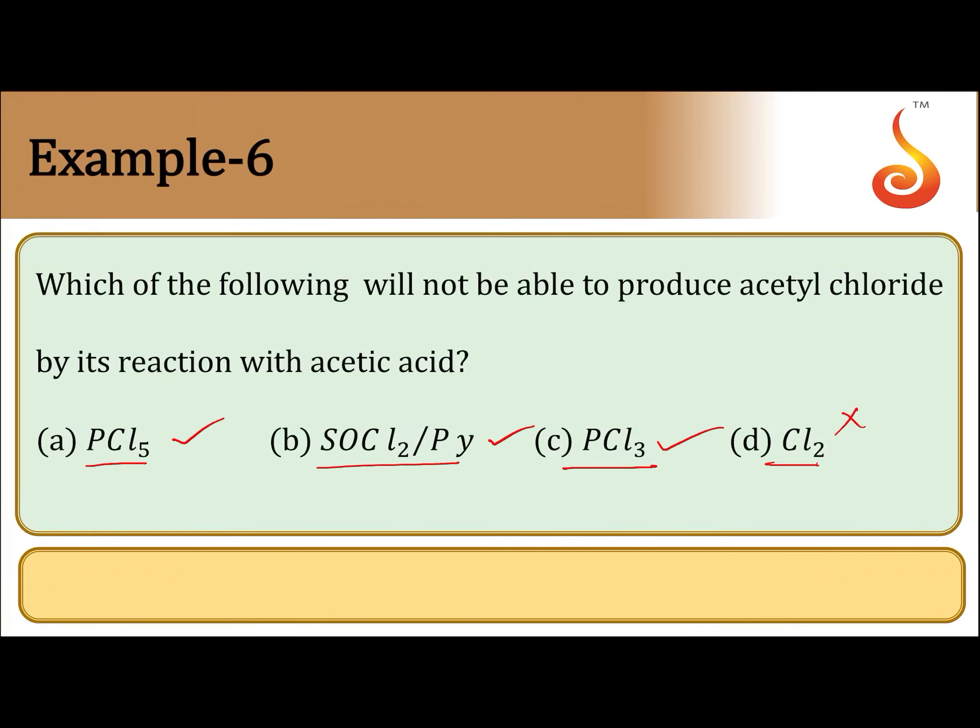So it should be option D. From option D, that is by reaction with chlorine, acetic acid will not give acetyl chloride.